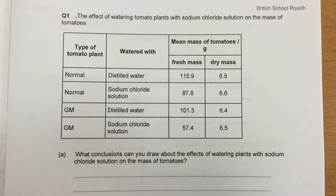The question is about the effect of watering tomato plants with sodium chloride solution on the mass of tomatoes. We've got a table showing two normal tomato plants and two genetically modified ones, compared with their fresh mass and dry mass. Remember, fresh mass is mostly water — if you weigh a plant it contains a lot of water — whereas dry mass is after desiccation, leaving just the cellular components.